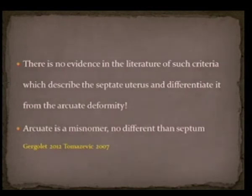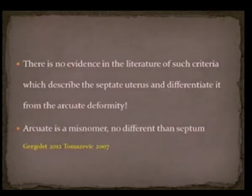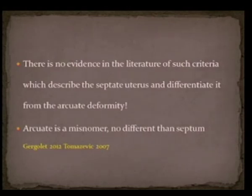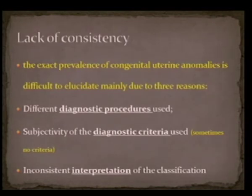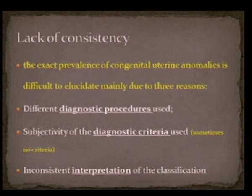So far, there is no evidence in the literature of criteria which describe exactly what a septate uterus, partial septate uterus, or arcuate uterus are, and the differences among them. Furthermore, some authors claim that arcuate is a misnomer and has no difference in behaviour in practice compared to a septum. So there is a lack of consistency in the literature, based on three main factors.